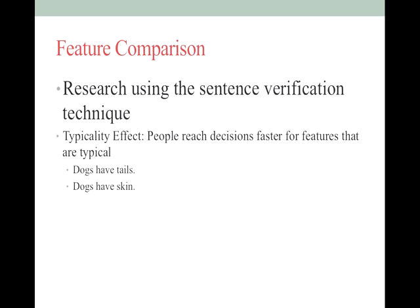A lot of this research is done with the sentence verification technique. They give people one sentence at a time — 'dogs have tails' — and all you say is yes, that's true, or no, that's false. Then 'dogs have skin.' What you find is that people are faster for features that are more typical — that's the typicality effect. 'Dogs have tails' gets a very fast yes. 'Dogs have skin' is kind of slow, because yeah, they do, but you don't really think about that very often.